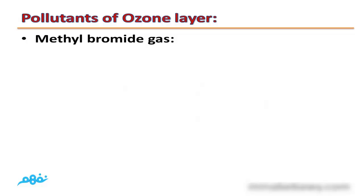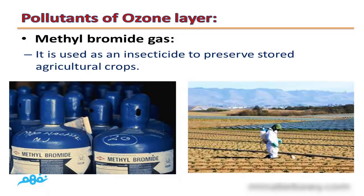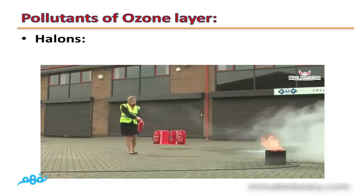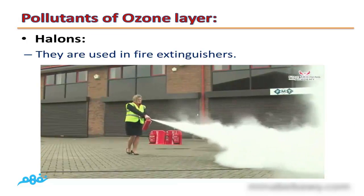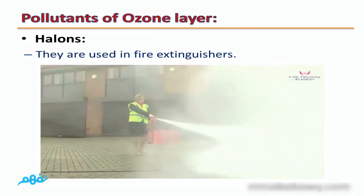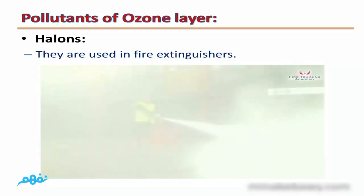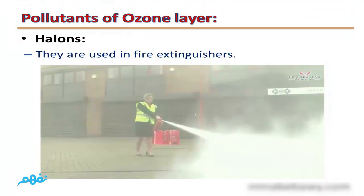The second pollutant is methyl bromide gas. Methyl bromide gas is used as an insecticide to preserve stored agriculture crops. The third pollutant is halons, which are used in fire extinguishers to put out fires.